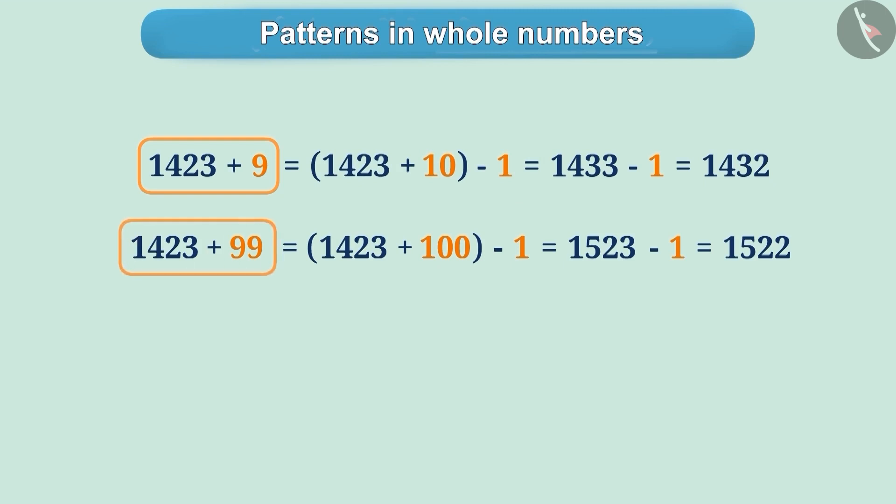Similarly, to simplify 1,423 plus 99, 100 is added to 1,423 and 1 is subtracted from the result. Similarly, can you solve 1,423 plus 999 this way? It can be solved this way.